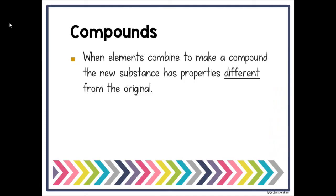When elements combine to make a compound, the new substance has properties that are different from the original — you could have a new color, an odor, or a different texture. For example, if you burn a match, there's a strong odor when it ignites, the smoke is different from the original match, and the ashes have a different texture and color. These are clues that new compounds have been made.